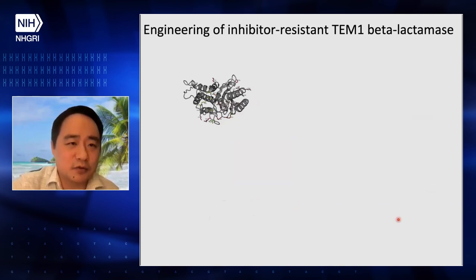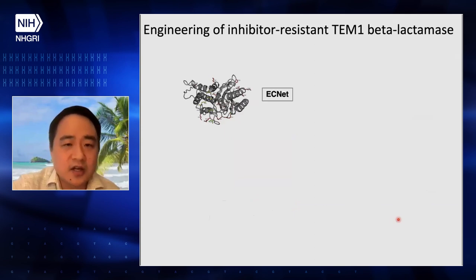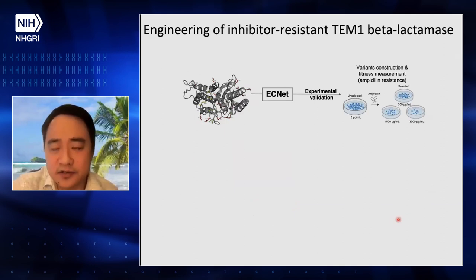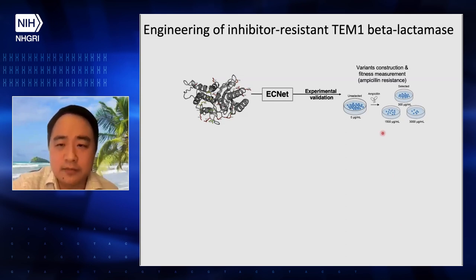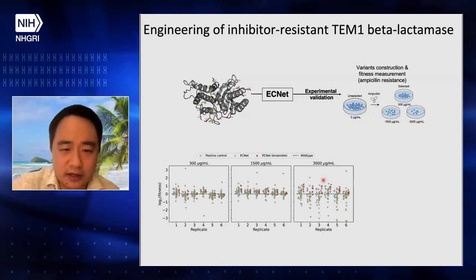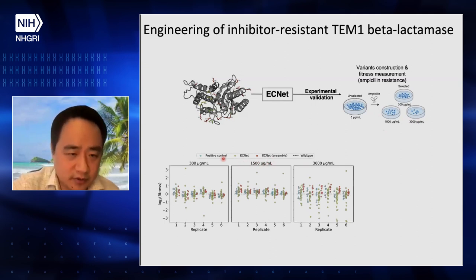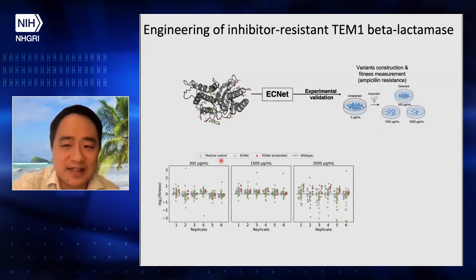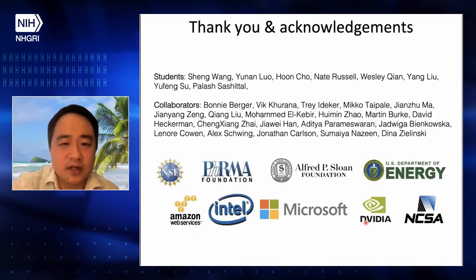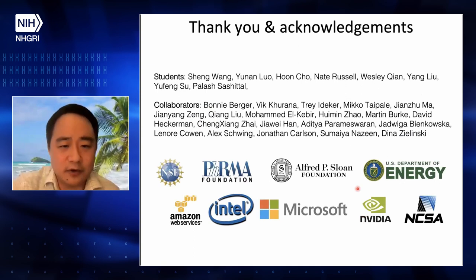Finally, we applied this to actually engineer inhibitor-resistant beta-lactamase. We take the sequence structure and use our ECNet to design a collection of mutants with high-order mutations, then check whether they are resistant to the important antibiotic compound MPC-line across different concentrations. Here we have two different models and also positive controls — there are very few positive controls in the literature, which means this is very hard protein engineering. We replicated this experiment multiple times and show that our hit rate is really pretty good when the concentration is high. Thank you, and thanks to my students, collaborators, and all the funding agencies.